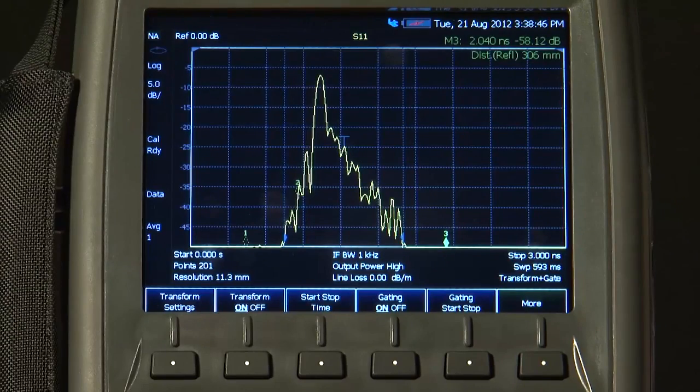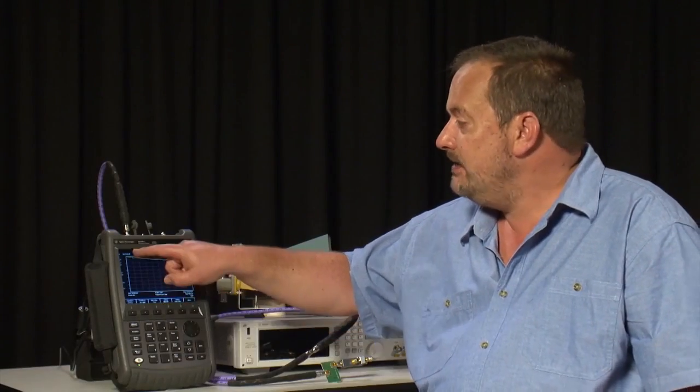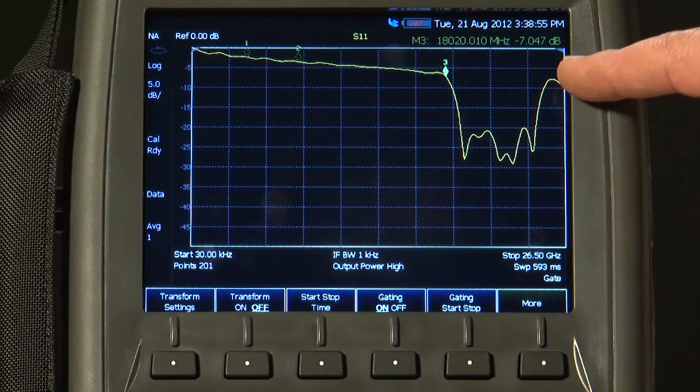So if I now turn off the inverse Fourier transform, but I will leave the gating on, you'll see we are back in frequency domain again, but much of the ripple on the trace has now disappeared.